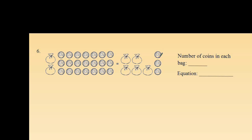We'll start by looking at the number of coins on each side. If I were to take away these 3 coins — just cross them out — in order to keep the equation balanced, I'd have to take away 3 coins from the other side as well. That leaves me with the 2 bags of unknown coins and now 18 visible coins on the left side. On the right side, I still have my 5 bags of unknown coins, and the 3 coins were removed, so I don't have any visible coins anymore.